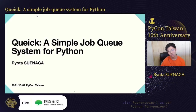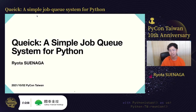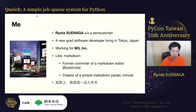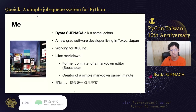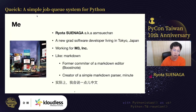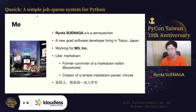Thank you for the introduction. My presentation title is Qwik, a Simple Job Queue System for Python. My name is Ryota Senaga, also known as ASM Suichen. I'm a new grad software developer living in Tokyo, currently working for M3, the largest internet tech medical company in Japan.